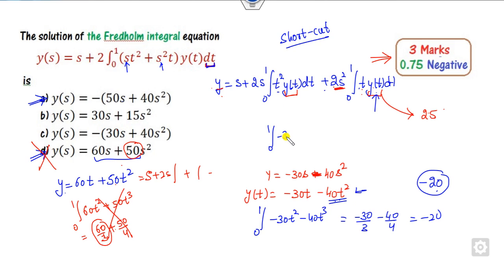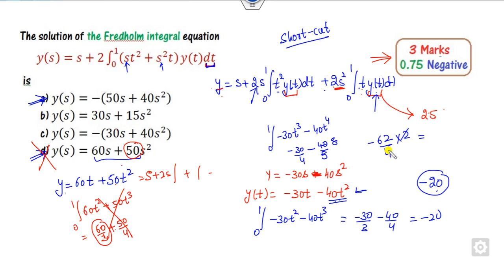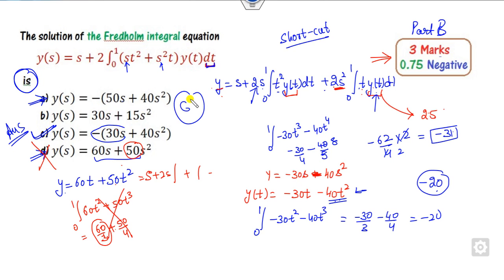Now check the second condition: multiply by t² and integrate. We get −30t³ − 40t⁴, giving −30/4 − 40/5. Multiplying by 2, this gives −30s. So we get −30s, which matches. Therefore the right answer is option C. Since this is a part C question with only one correct answer, option C is correct.